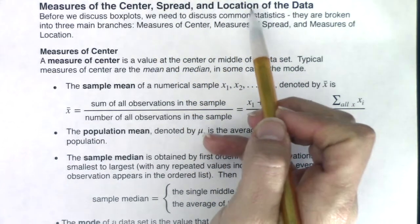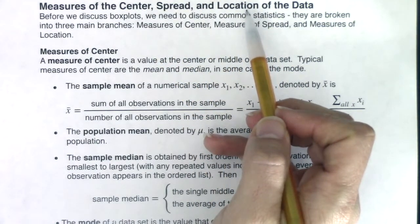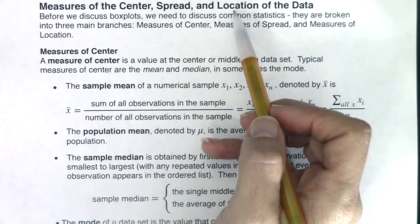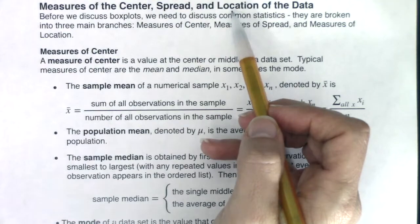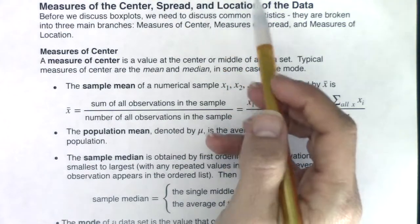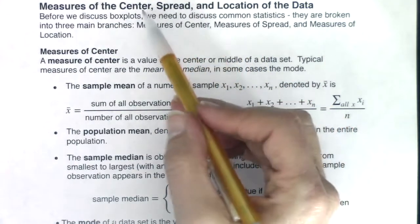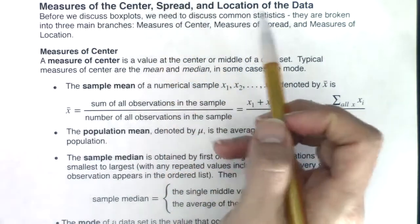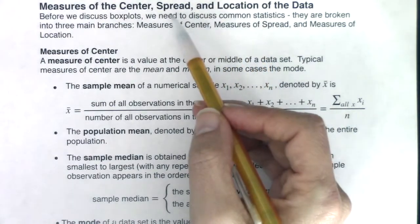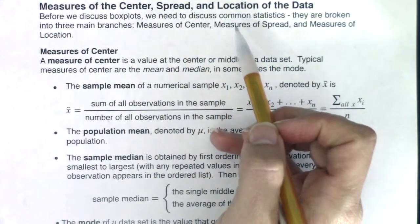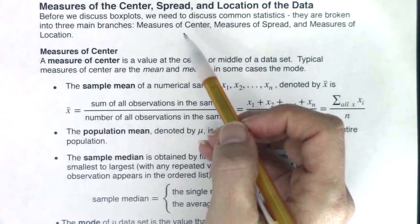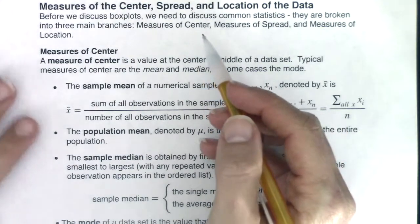And then eventually we'll get to location. Location stands for things like the percentiles, the quartiles, the median, things like that. And there's a couple of overlaps. Some measures of center are also measures of location. Some measures of spread are also measures of location. So we'll start to talk about that and unpack all of that as we move along.